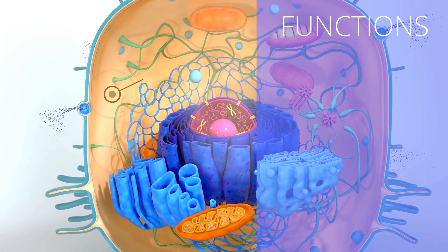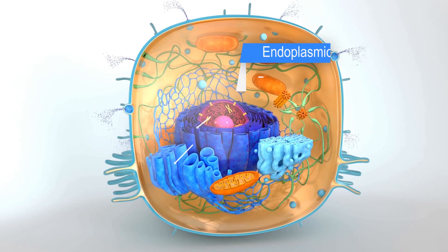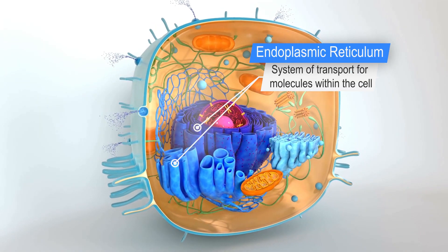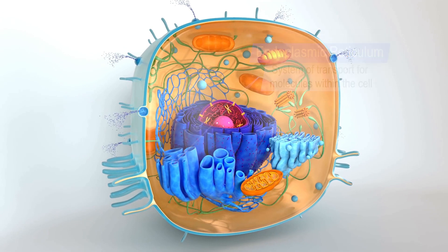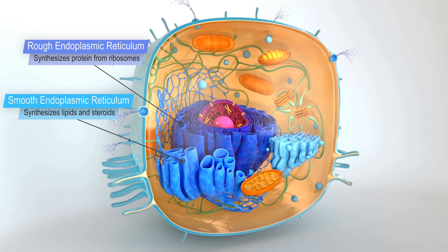The third part is the cytoplasm, which is composed of the following organelles. Endoplasmic reticulum serves as a system of transport for various molecules within the cell, and is divided into rough and smooth ER. The major role of rough ER is to synthesize protein from ribosomes. Smooth endoplasmic reticulum does not have ribosomes, and is involved in the synthesis of lipids and steroids.